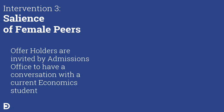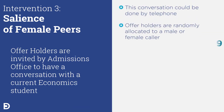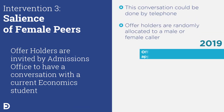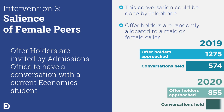The third intervention uses the salience of female peers. All offer holders are invited to have a telephone conversation with a current economics student who might be male or female. We are going to analyze whether the offer acceptance rates depend on the gender of the caller for each offer holder.